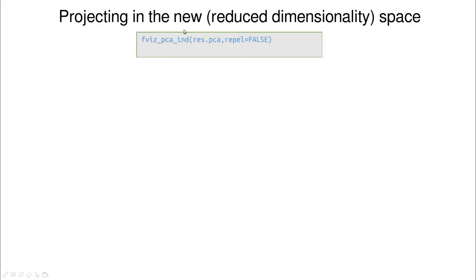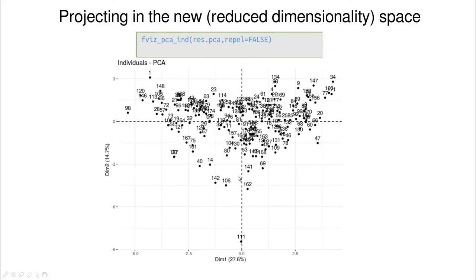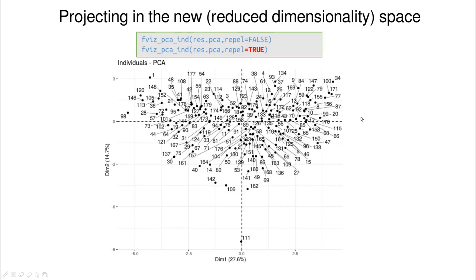We've talked a lot about variables, so let's talk about rows — observations or individuals. We have this representation: a rotation into new principal components and then a projection into just two dimensions, compressing information from higher dimensions. You can see a banana-shaped distribution of points. If the dataset is not too large, you can use the parameter repel equals true to repel labels from points so the plot is more readable.